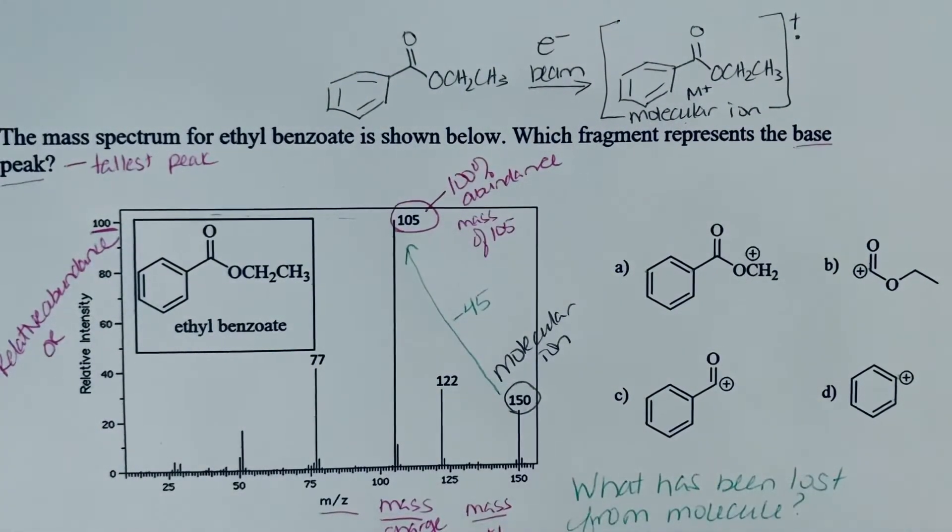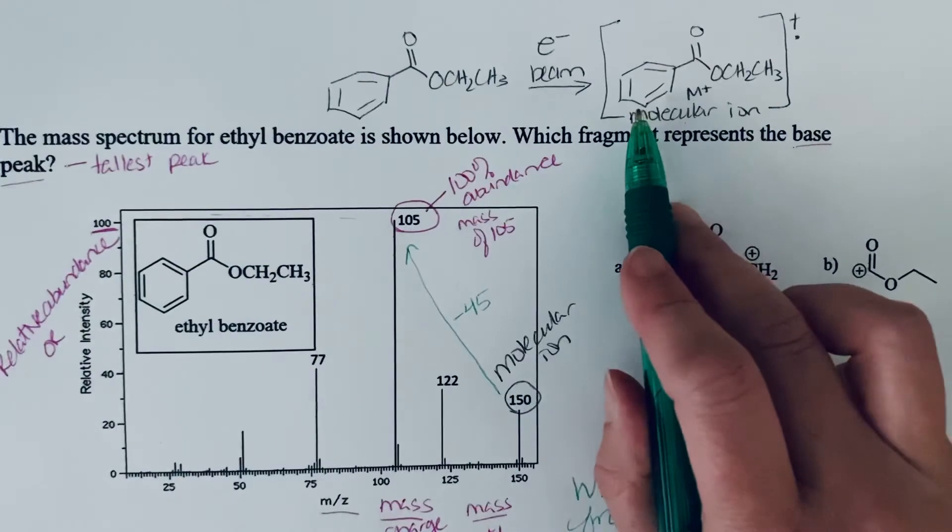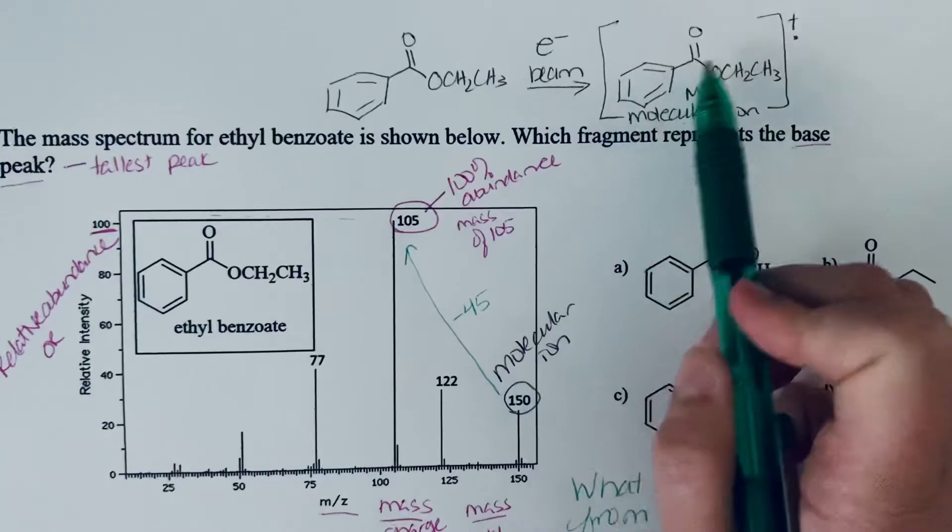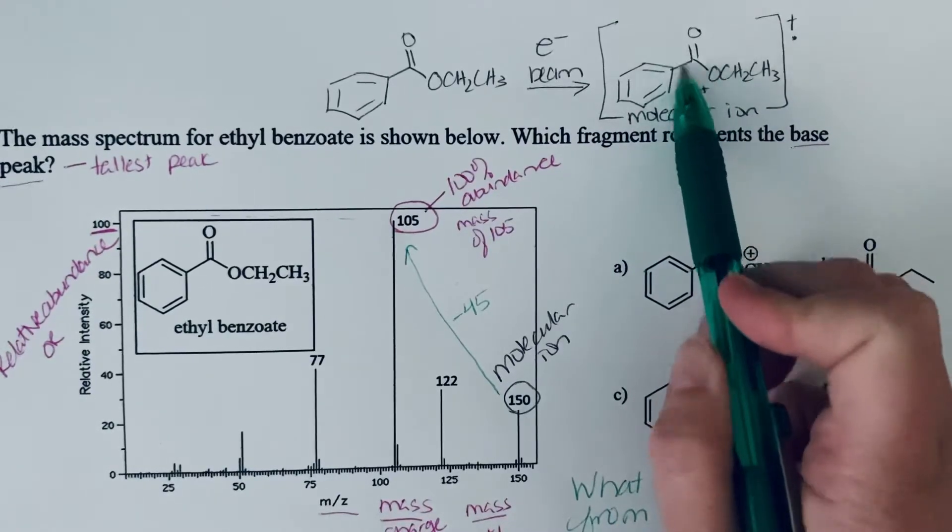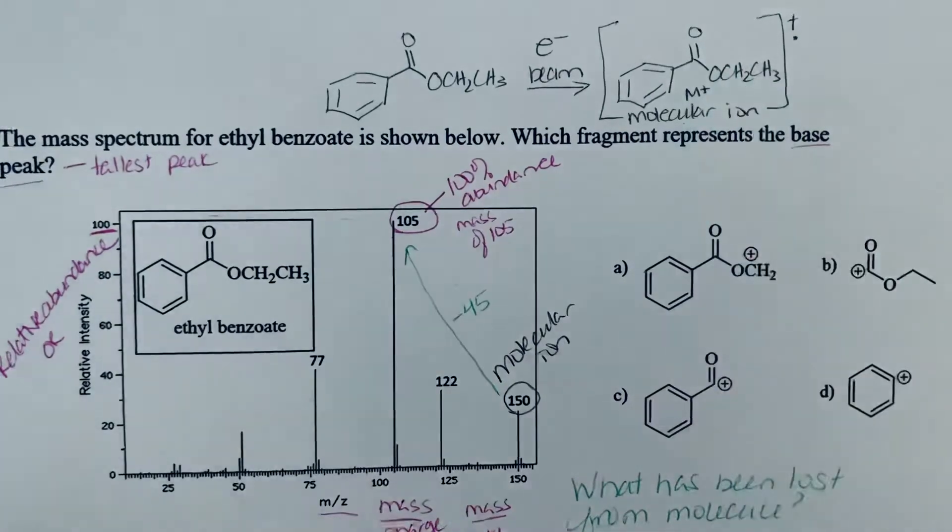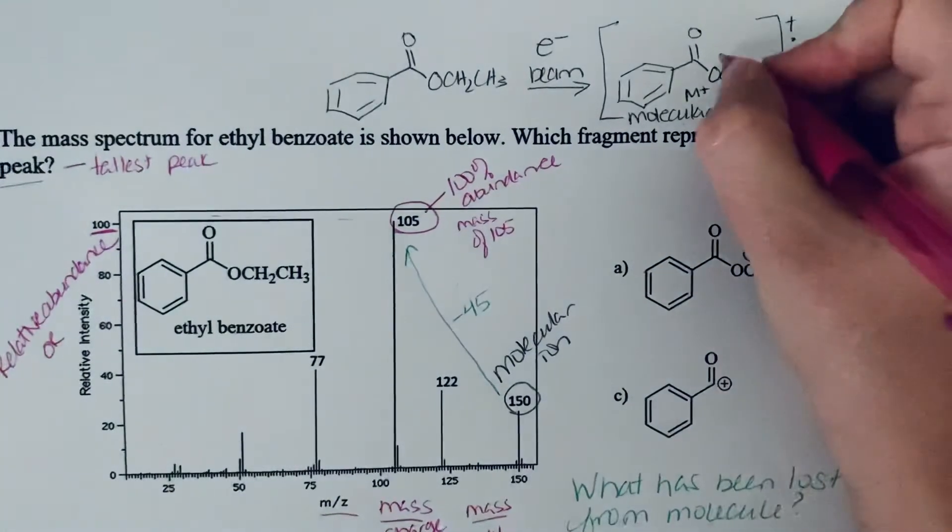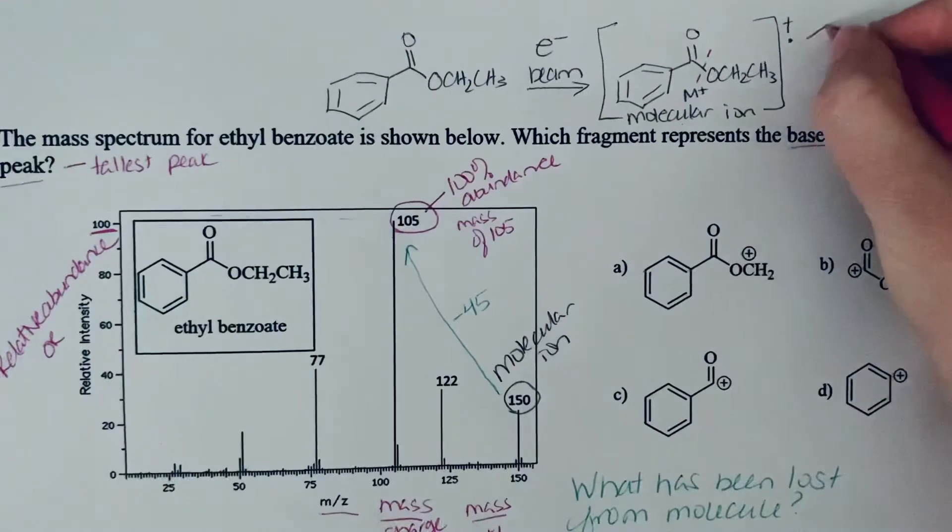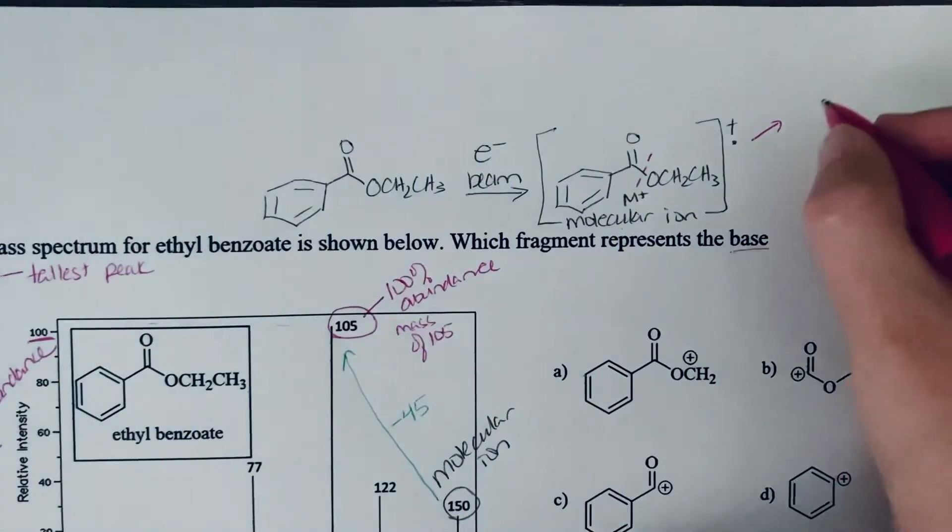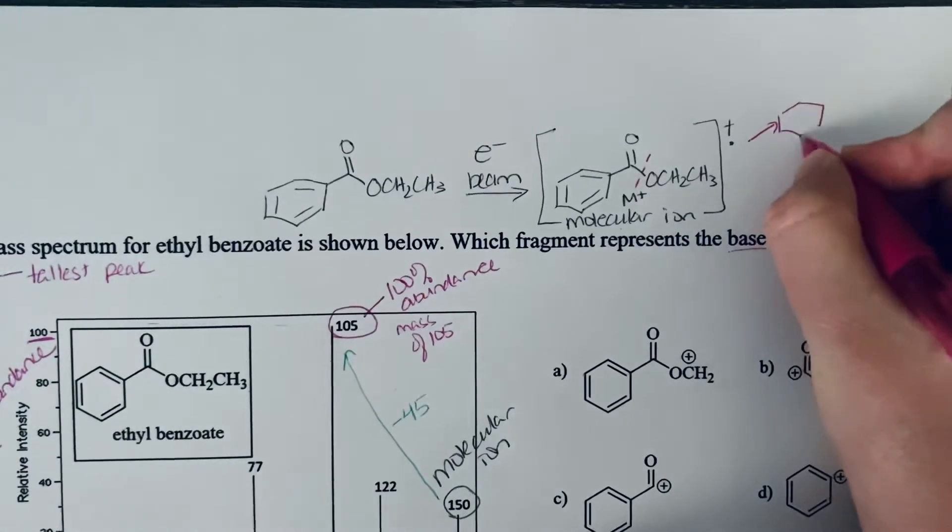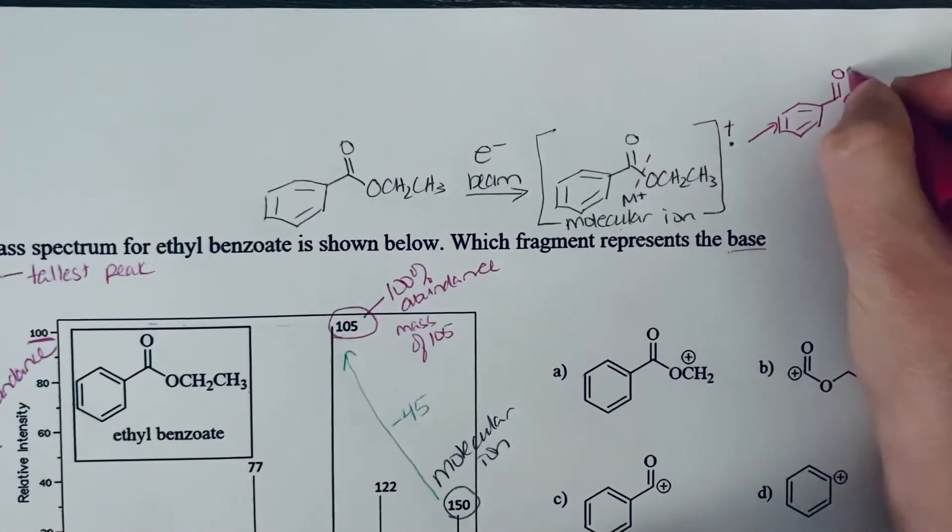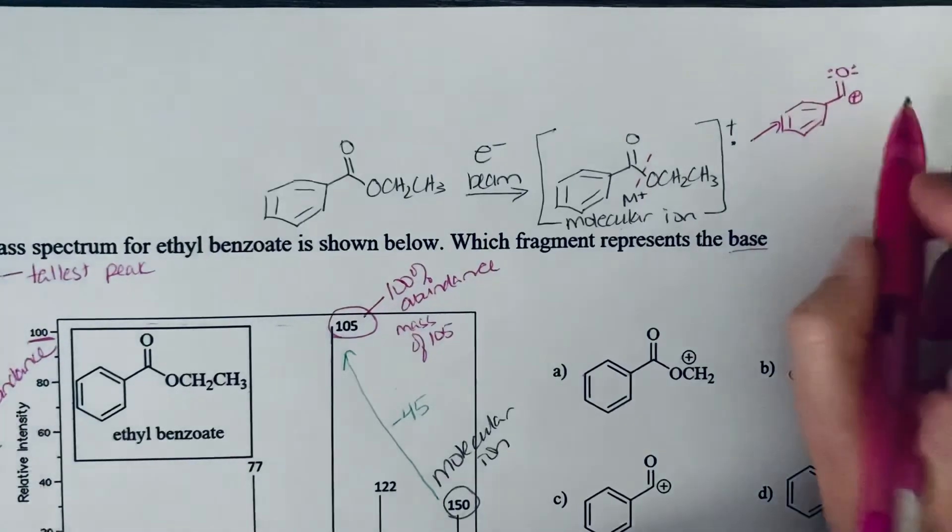A common fragmentation pattern we see is cleavage alpha to the functional group. So we have an ester, and what esters tend to do is they tend to cleave the bond alpha to the carbonyl. So we're probably going to see some alpha cleavage right here that loses that ethoxy group. That would give you this cation, which can be resonance stabilized.